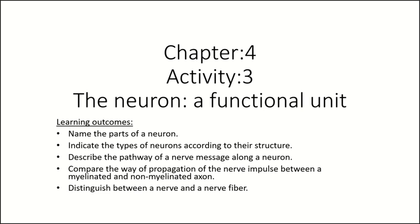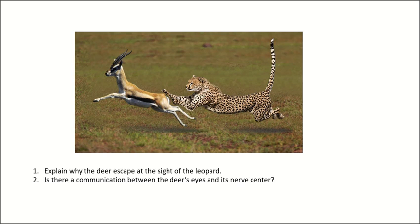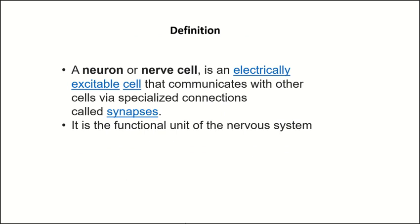We'll explain activity three in chapter four: the neuron, a functional unit. This figure shows a deer escaping at the sight of a leopard, indicating there is communication between the deer's eyes and its nerve center. This communication occurs through specific cells called neurons. A neuron, or nerve cell, is an electrically excitable cell that communicates with other cells via specialized connections called synapses. It is the functional unit of the nervous system.